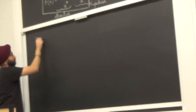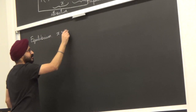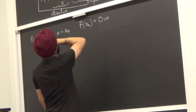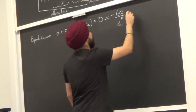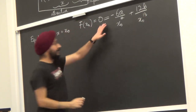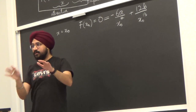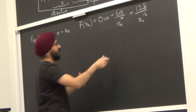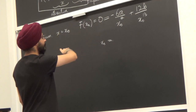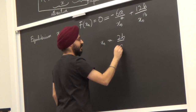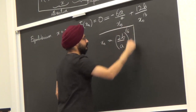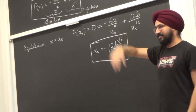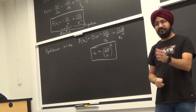Equilibrium is the point x = x₀ where the force vanishes. Setting F(x₀) = 0: -6a/x₀⁷ + 12b/x₀¹³ = 0. x₀ cannot be 0, so solving gives x₀ = (2b/a)^(1/6). That's the equilibrium point where the net force on this system is zero.